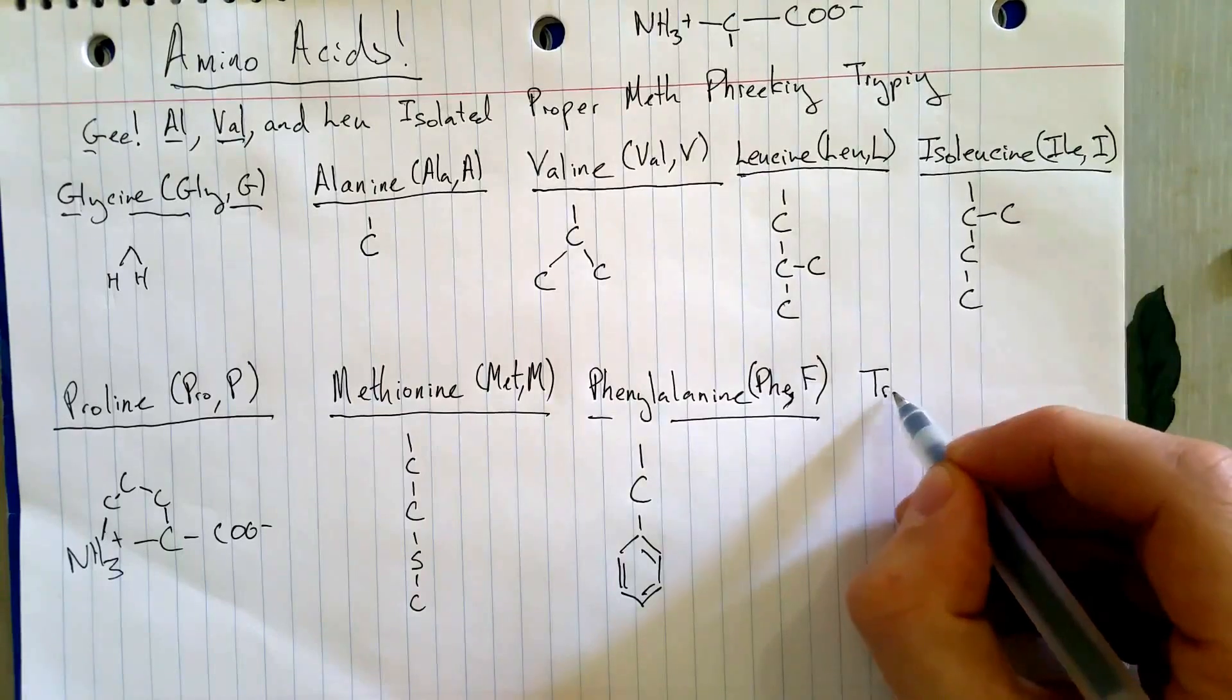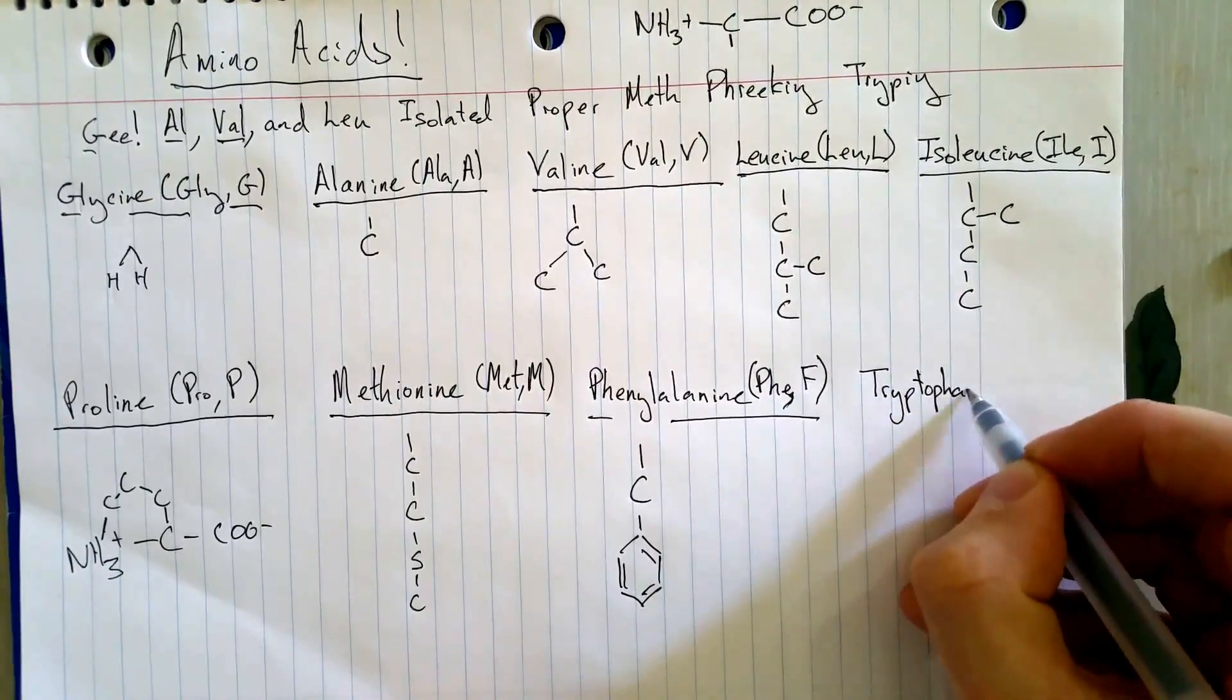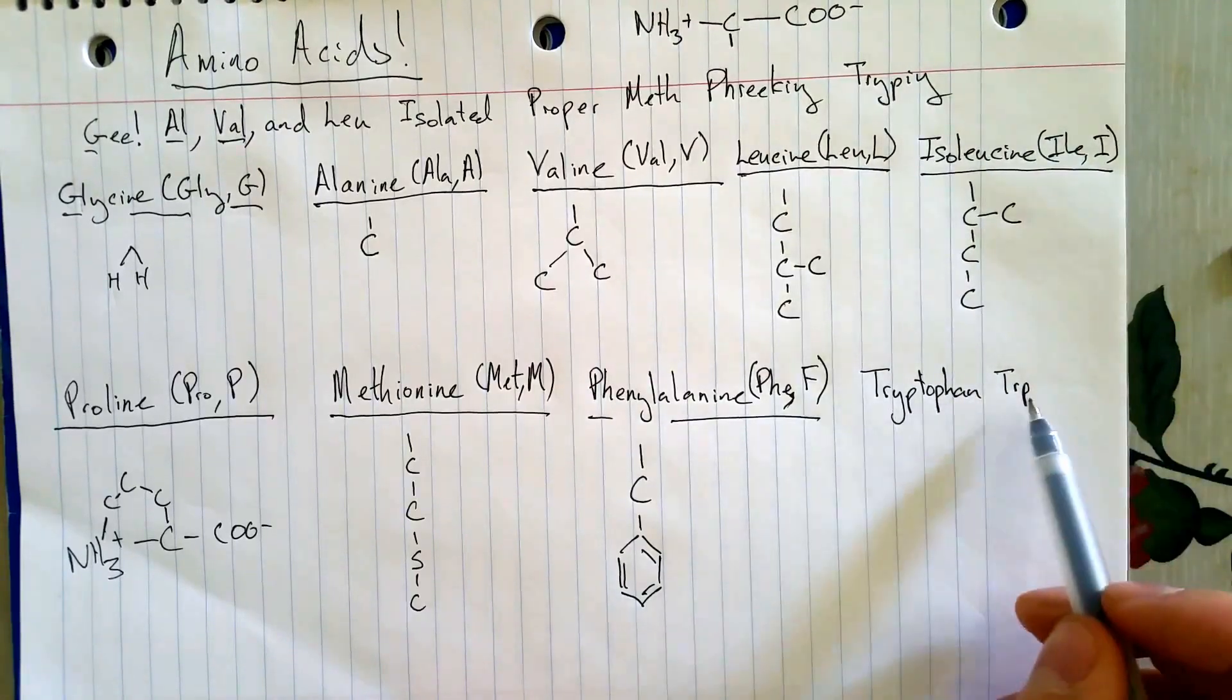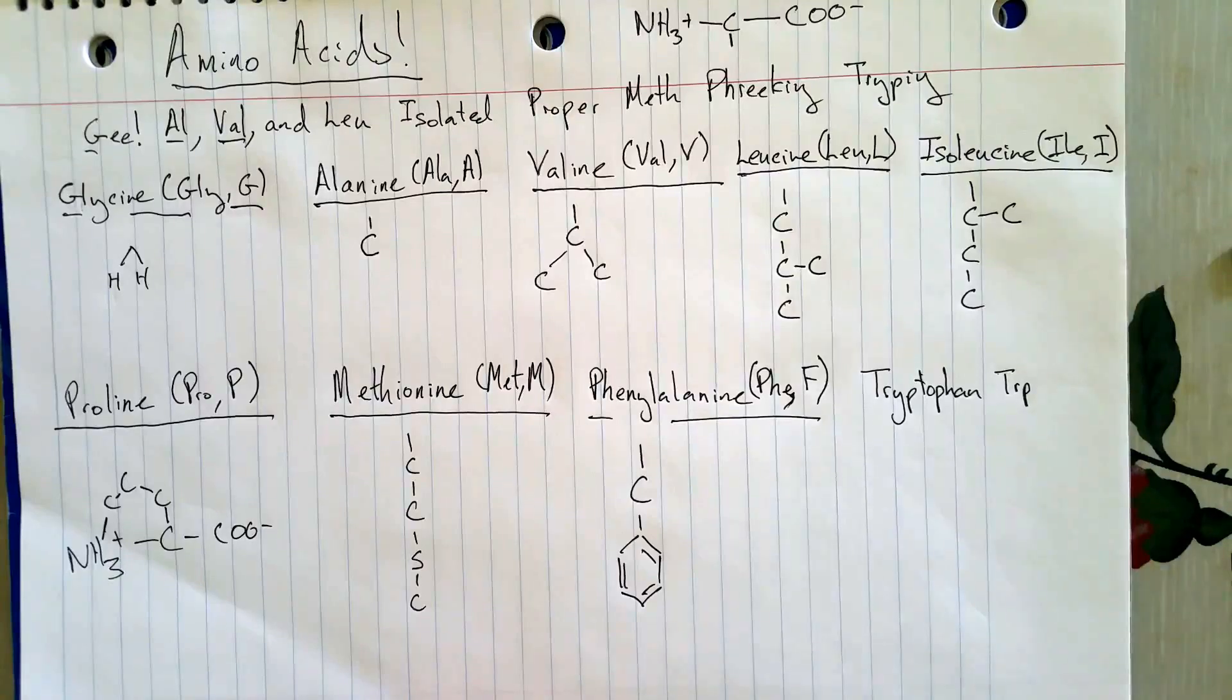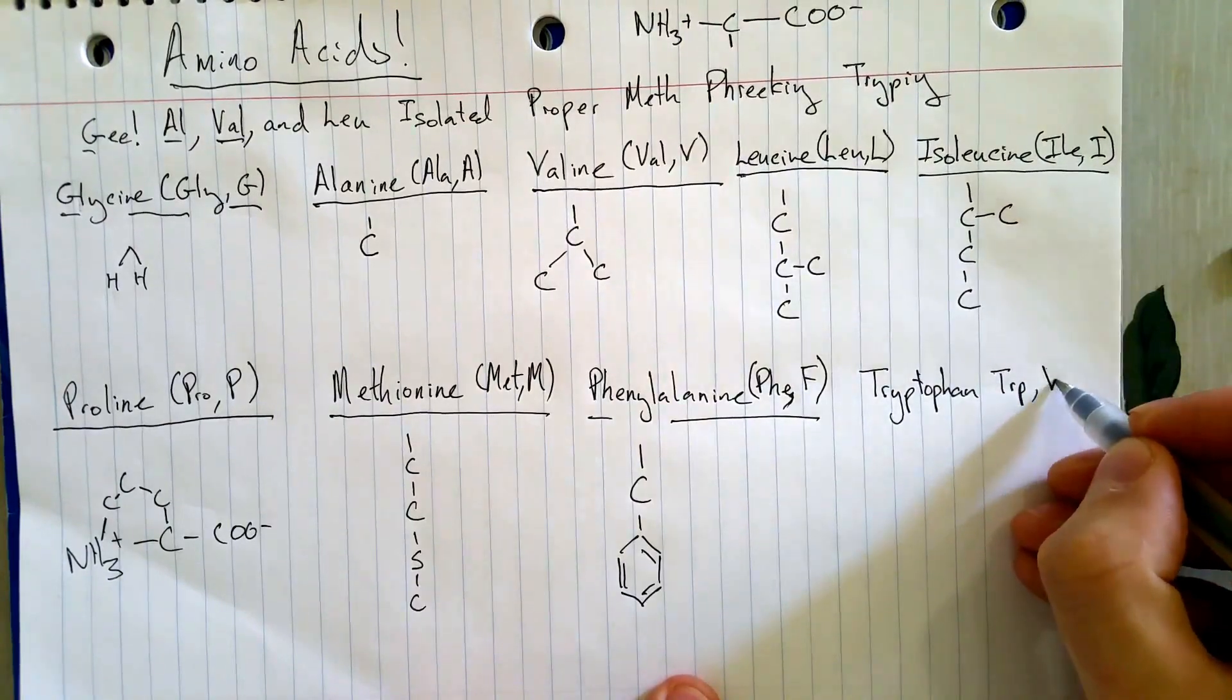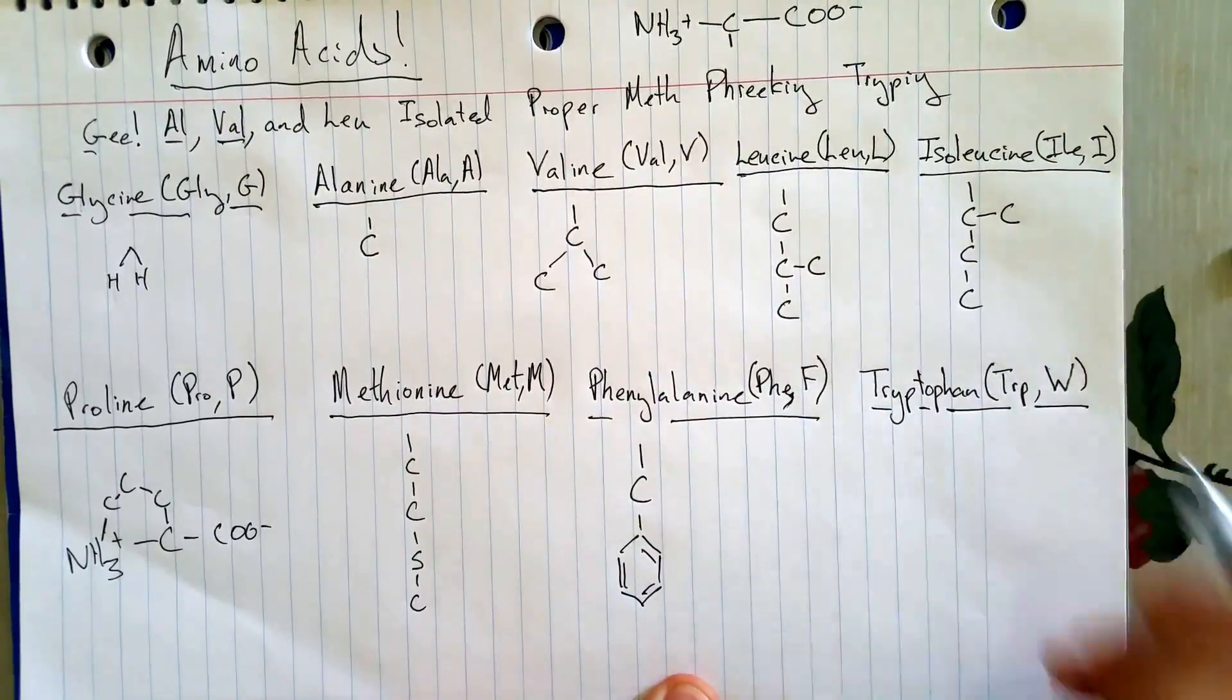And finally, tryptophan. The fact that we said they were trippin' is a clue that the three-letter abbreviation is TRP trip. And they're trippin' so hard that they came up with the idea that the one-letter code should be W. And they were so high on meth that they actually thought that made sense. That's how I remember that.